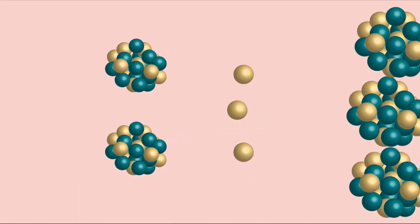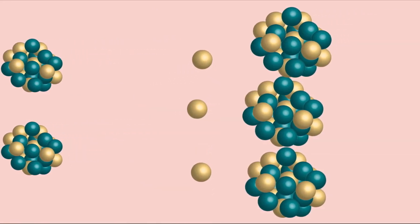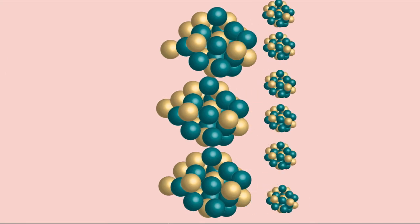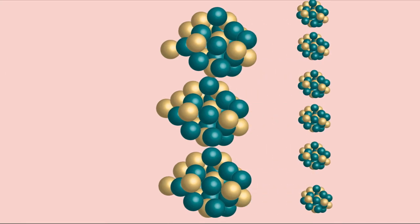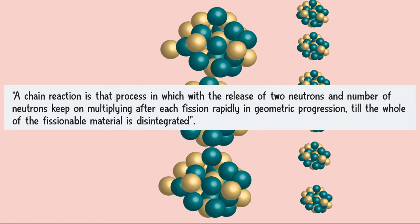The neutrons released in the process bring about fission in other nuclei and result in setting up a chain reaction. A chain reaction is that process in which, with the release of two neutrons, the number of neutrons keeps multiplying after each fission rapidly in geometric progression, till the whole of the fissionable material is disintegrated.